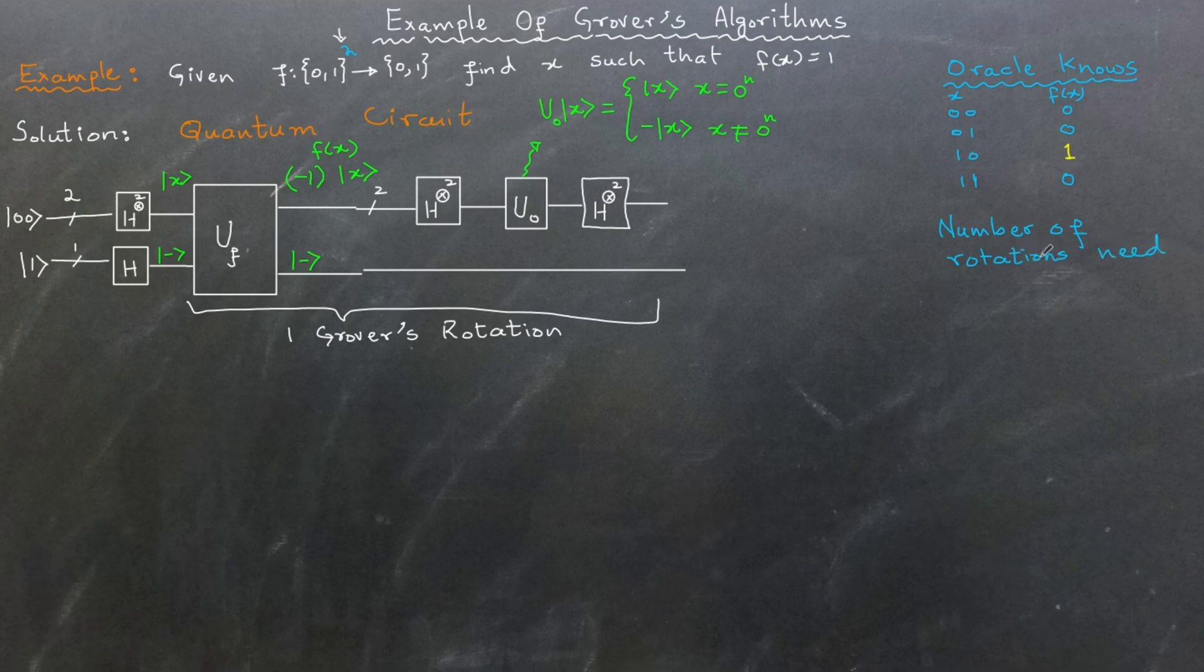As we have discussed in the previous video, the number of rotations is determined by the formula: the floor of π/4 multiplied by the square root of total number of elements in the domain divided by the number of solutions, minus one-half.